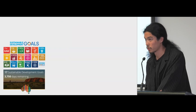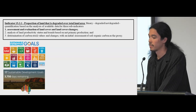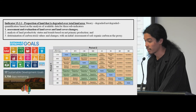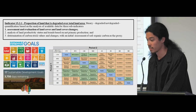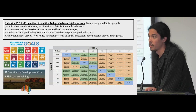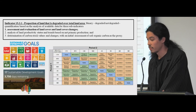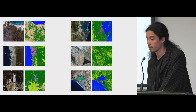I mentioned the sustainable development goals earlier. If you have an indicator such as the proportion of land that's degraded over total land area, you can measure that directly by comparing two classified images using this level three classification and seeing whether it's agricultural expansion, wetland drainage, or vegetation establishment. Using that, you can understand whether we're getting closer towards meeting our goals.